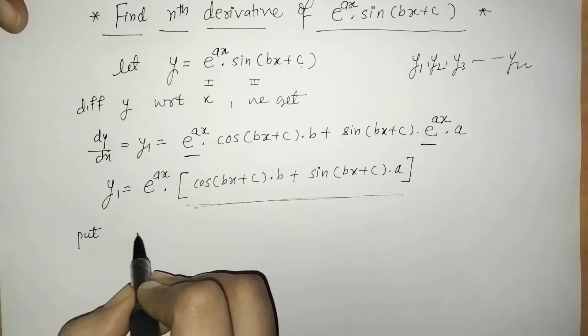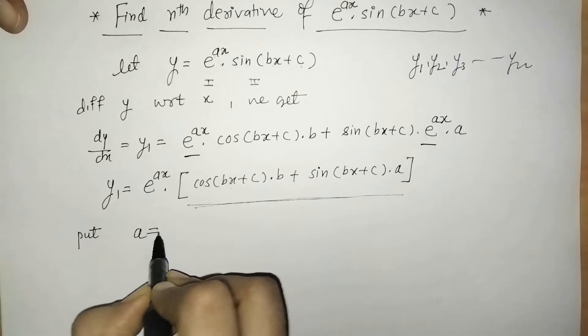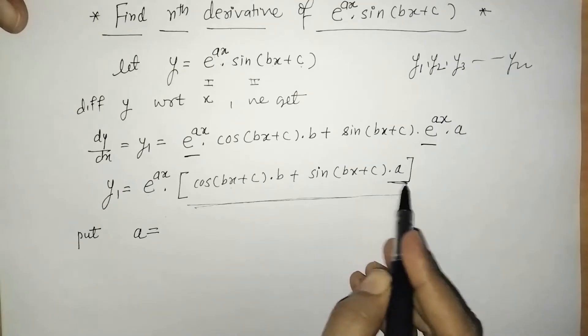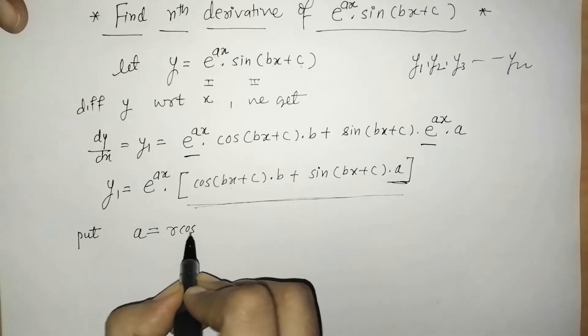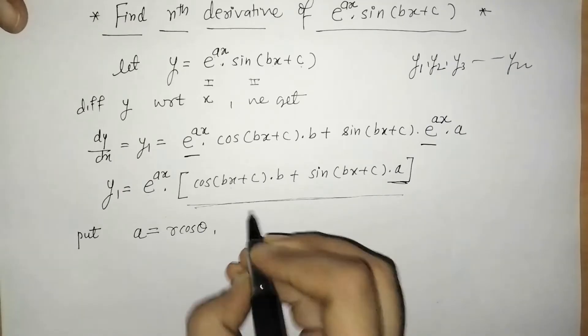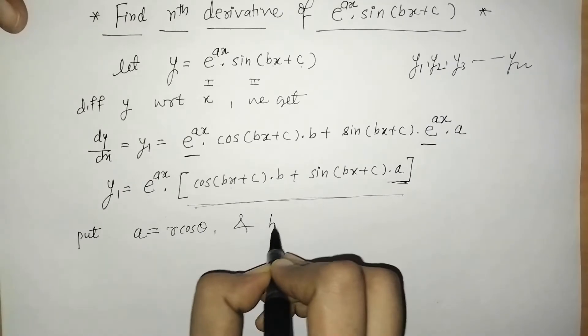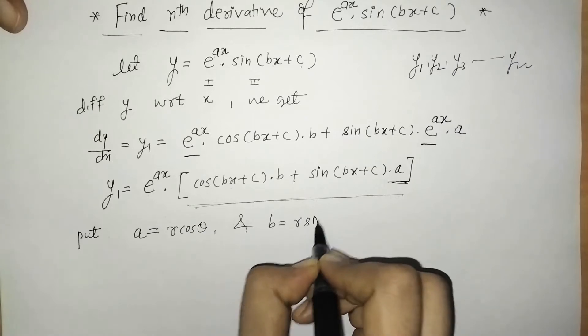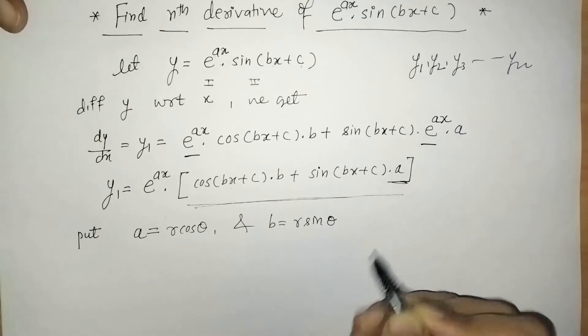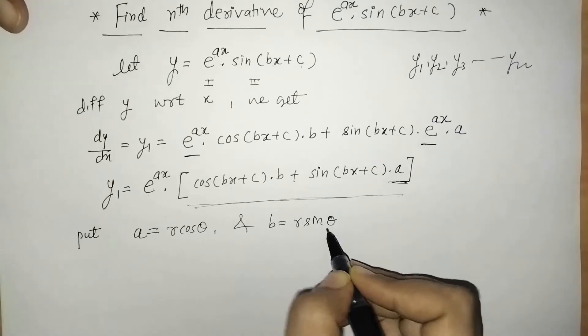So for the sake of convenience we have to convert these bigger terms into smaller ones, and for that we do a substitution. Let us put a = r·cosθ and b = r·sinθ.